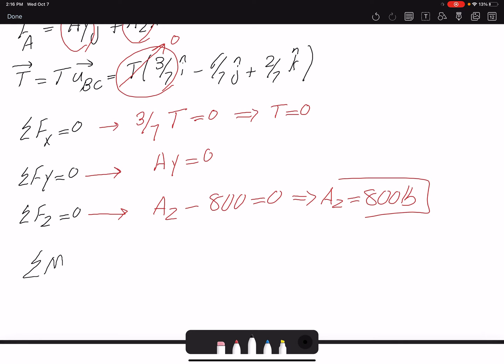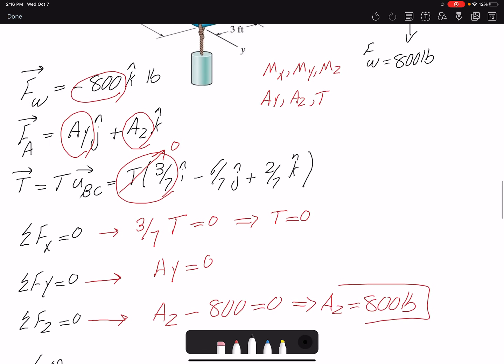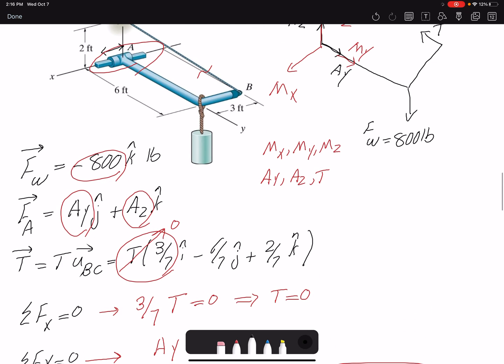I can write summation of moment about point A equals zero. So about point A, all the forces that are applied at point A are not going to create any moment because the moment arm would be zero. But the moments that are being applied on the system are also present. So I have MX, MY, and MZ.